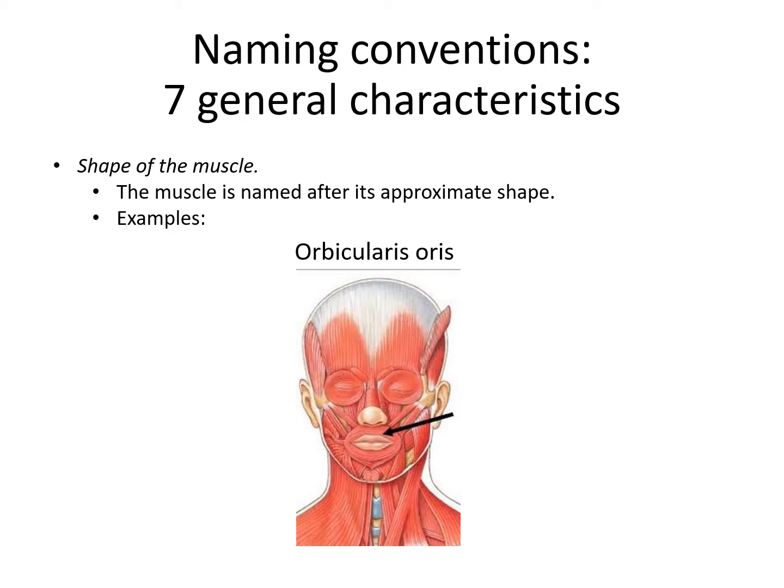The orbicularis oris is a name in which the location of the muscle is also necessary, because if you just named it the orbicularis — it circles — you'd need to specify what it circles. So in this case, you have to give it an additional identifier.